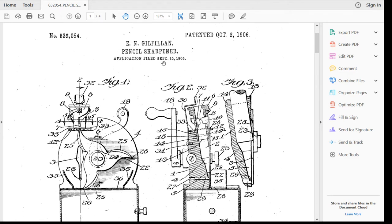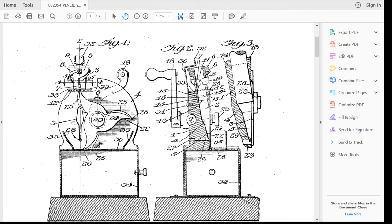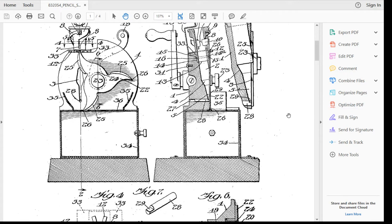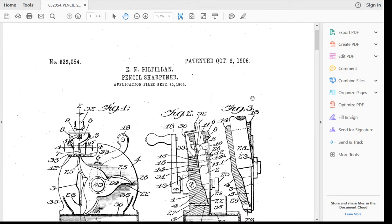I'll make another video of my pencil pointer, which is a very cool monstrosity. But here you can see it looks just like the device I showed you. It's got the blades and everything. And the date is 1906. Patent was issued October 2nd, 1906.